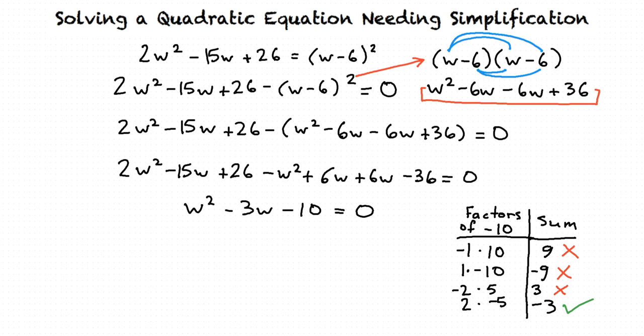We now add each of these to a w in parentheses, like this. w plus 2 times w minus 5 equals 0. If we want to check that these factors are correct, we could multiply them together and see that they equal w squared minus 3w minus 10.